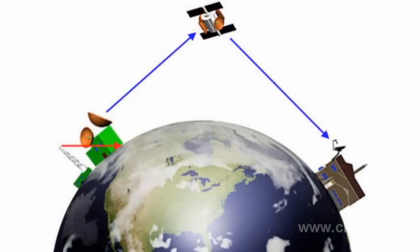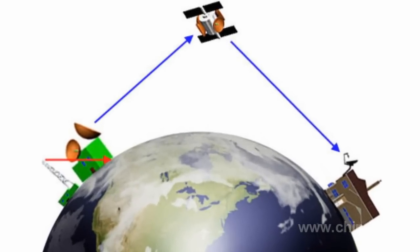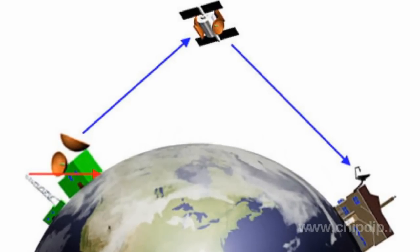An electromagnetic wave transmitted from a satellite communication antenna to an Earth station antenna has a specific feature: polarization, which is the electric field vector orientation relative to the Earth. Thus, a satellite signal is distinguished by the type of signal polarization in addition to the frequency range.